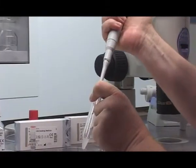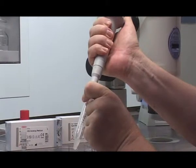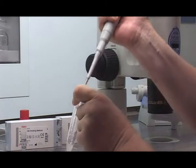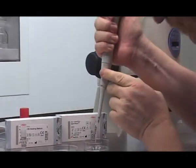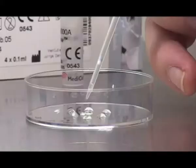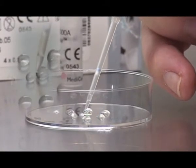Aspirate the selected volume of the sperm suspension. Place the sperm suspension close to the SpermSlow drop located in the centre of the dish and create a junction between SpermSlow and the sperm suspension.